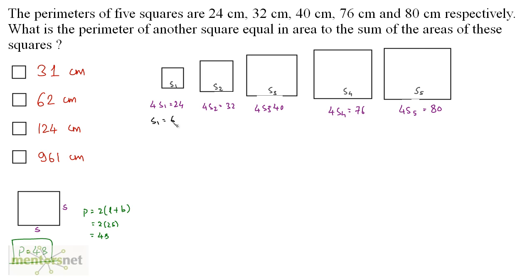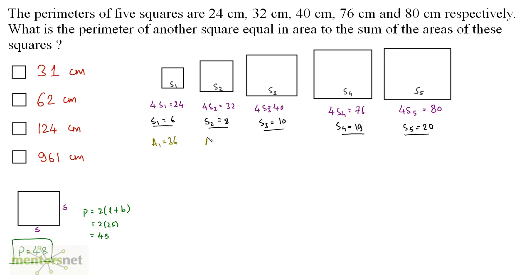s1 = 24 ÷ 4 = 6. s2 = 32 ÷ 4 = 8. s3 = 40 ÷ 4 = 10. s4 = 76 ÷ 4 = 19. s5 = 80 ÷ 4 = 20. Now let us calculate the area of each square. A1 = 6 × 6 = 36. A2 = 8 × 8 = 64. A3 = 10 × 10 = 100. A4 = 19² = 361. A5 = 20² = 400.